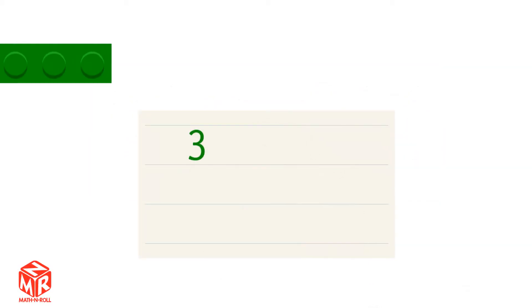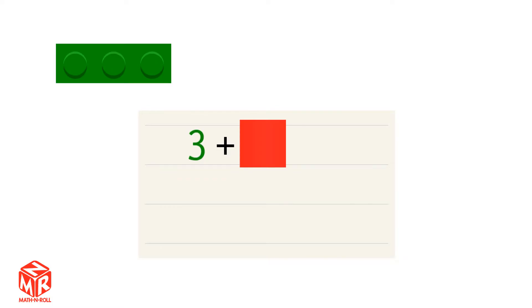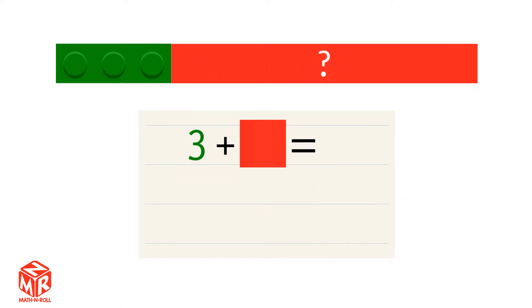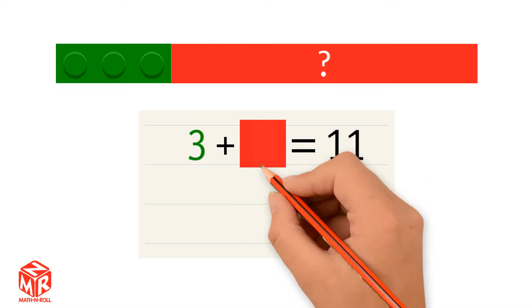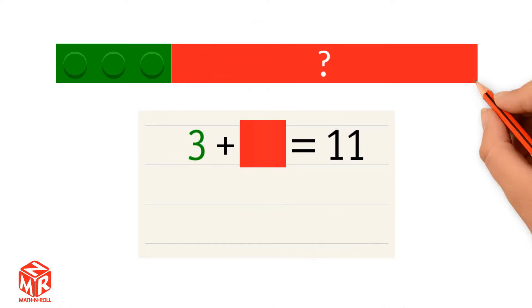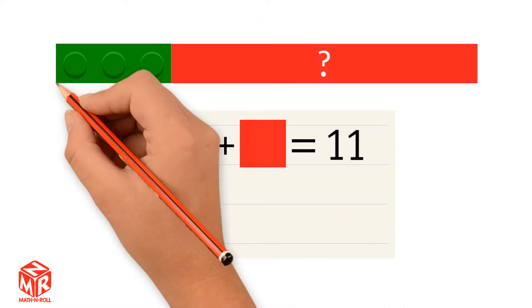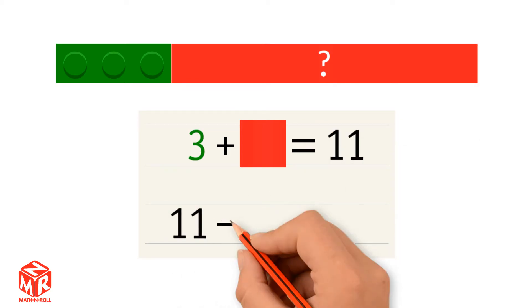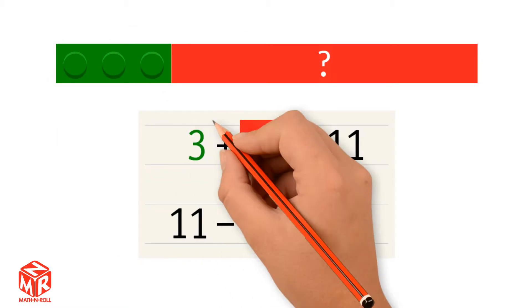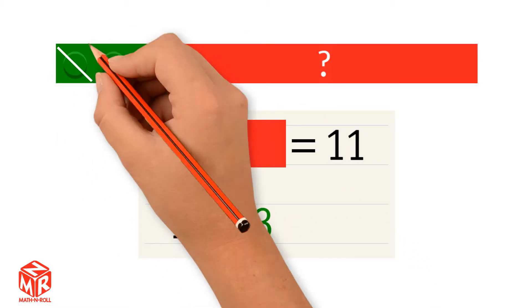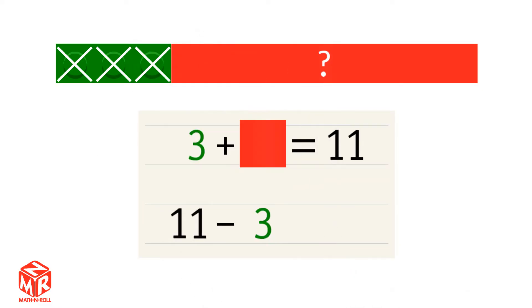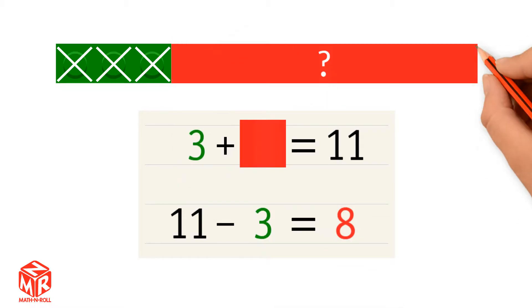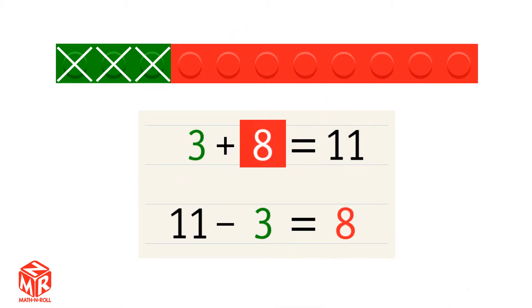3 plus an unknown number equals 11. So how do we find the unknown number? We take 11 and we subtract 3. 11 minus 3 equals 8. So 8 is our unknown number. 3 plus 8 equals 11.